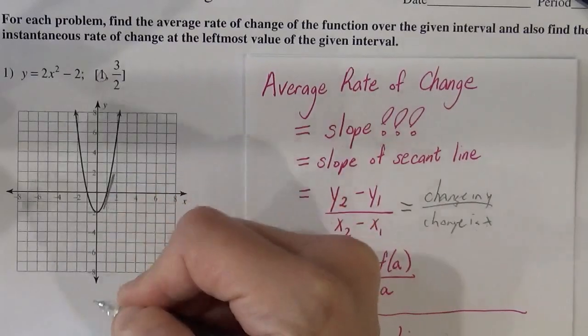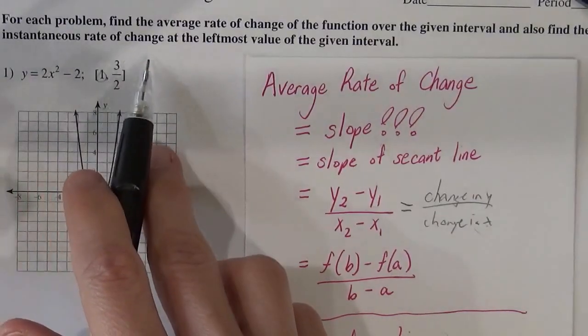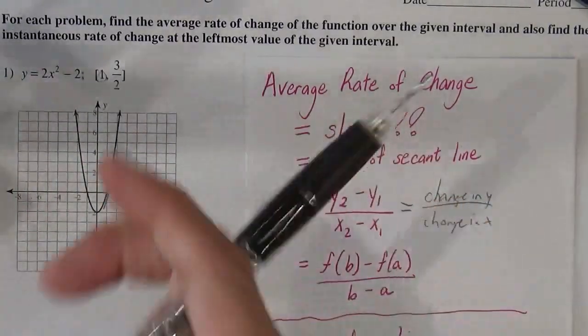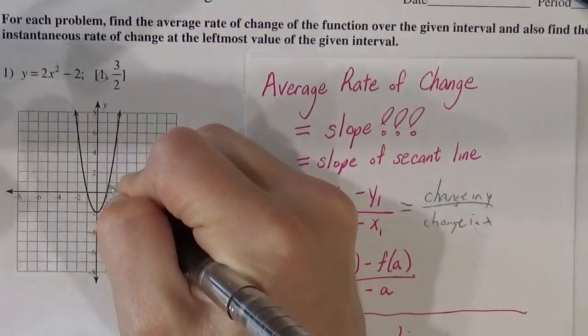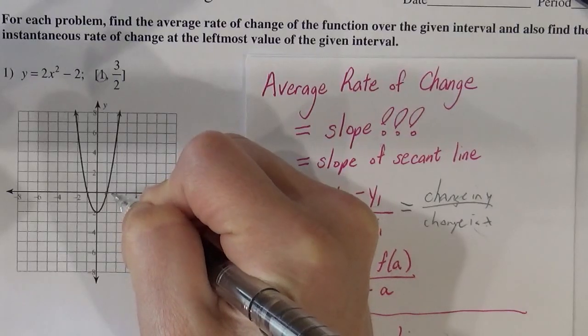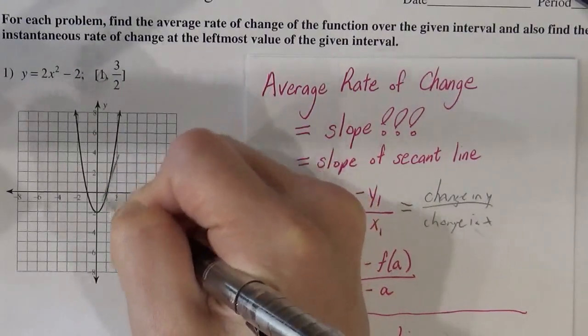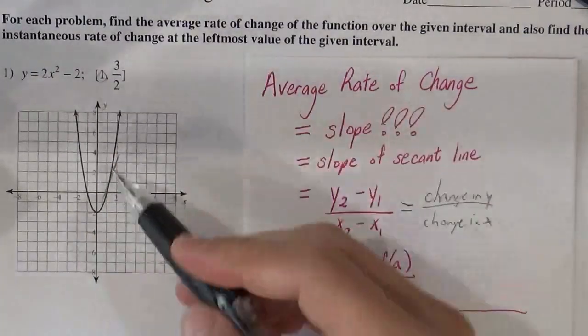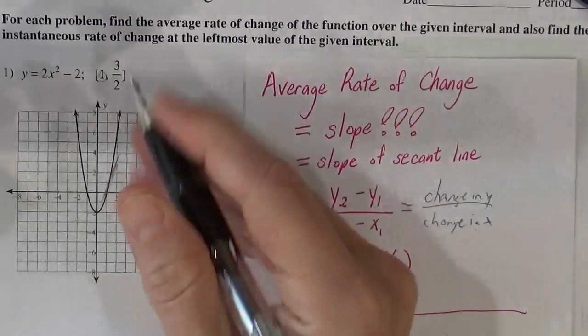We want to find the slope of this tangent line here, and we're going to do that with an instantaneous rate of change later. But before we know any calculus, the best you can do is find the slope of a secant line. So they say, start when x is 1 and then when x is 3 halves and find the slope of that line, and that's approximately the instantaneous rate of change. The slope of this line is about how fast it's increasing there.